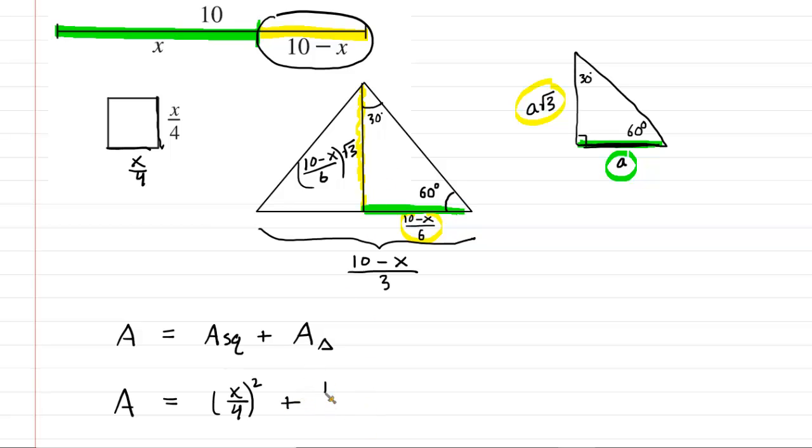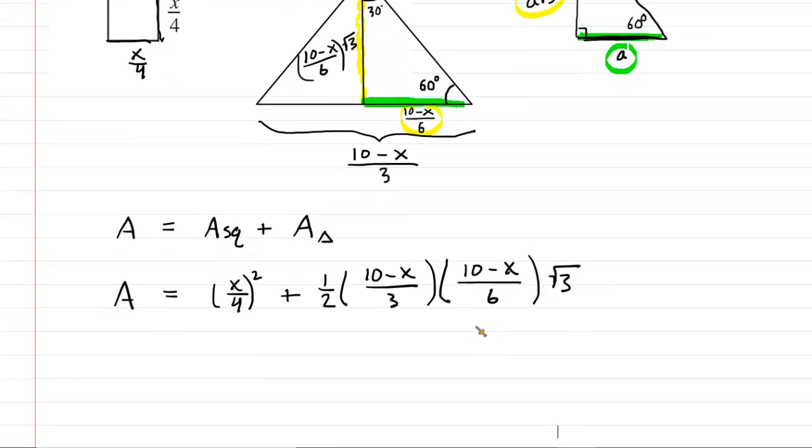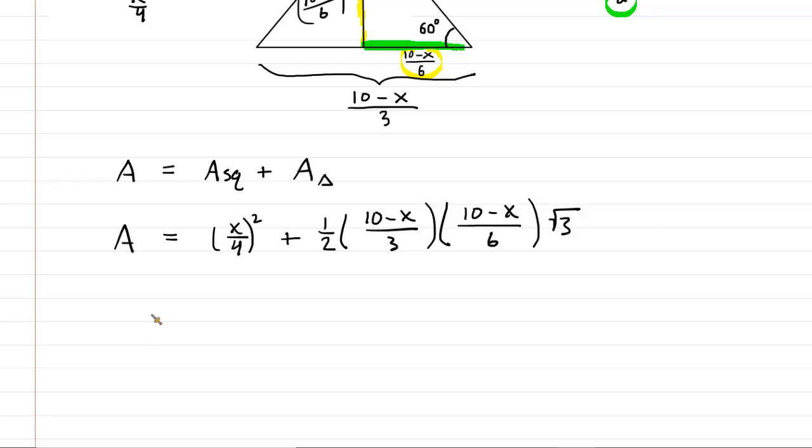Now, the area of a triangle is 1 half times the base. Remember, the base is the 10 minus x over 3, and then times the height, and that's that other expression, 10 minus x over 6 times radical 3. So here is our area function expressed in terms of a single variable x. We certainly want to clean this up. So let's square x over 4. That gives us x squared over 16. Let's not forget to square the 4 in the denominator there.